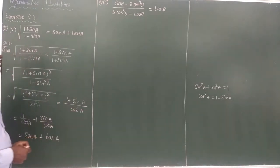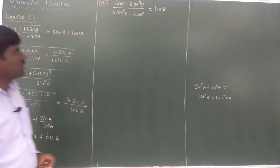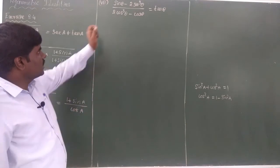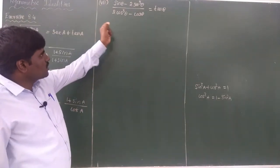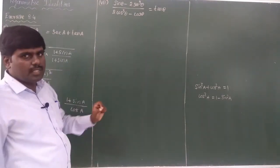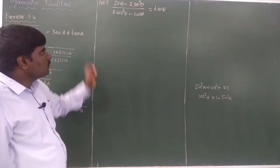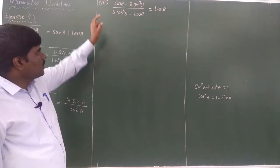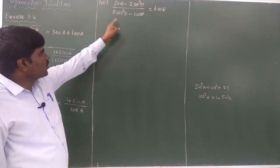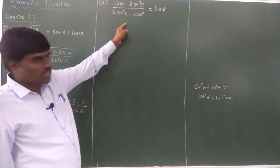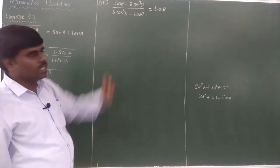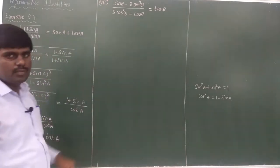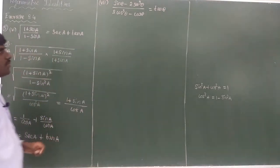Next, question number 7. The question is: (sinθ - 2sin³θ) divided by (2cosθ - cos³θ) is equal to tanθ. This is a proof problem.